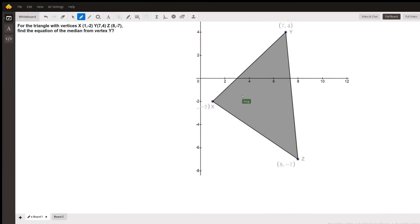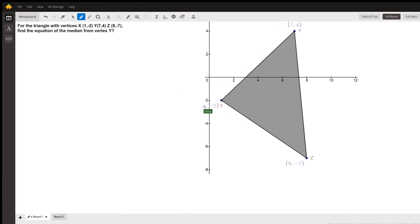Well, here's the triangle with vertices at x, y, z. Okay, this got cut off. This is x as a coordinate of 1, negative 2. Okay, and we're supposed to find the equation of the median from vertex y.